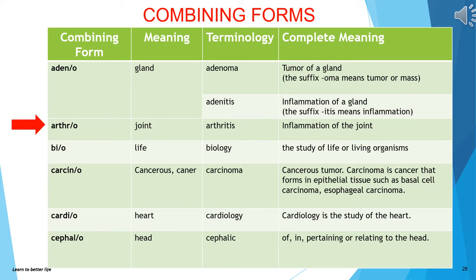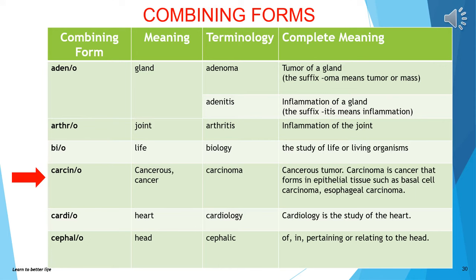Arthro- means joint; arthritis means inflammation of the joint. Bio- means life; biology means the study of life or living organisms. Carcino- means cancerous or cancer; carcinoma means cancerous tumor. Carcinoma is cancer that forms in epithelial tissue, such as basal cell carcinoma or esophageal carcinoma.